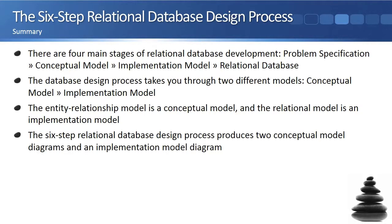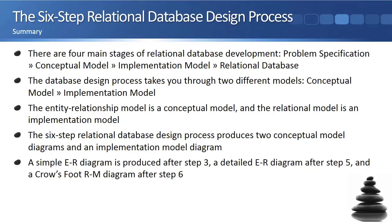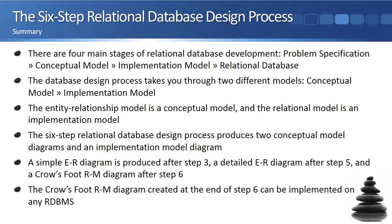The six-step relational database design process produces two conceptual model diagrams and an implementation model diagram. A simple ER diagram is produced after step 3, a detailed ER diagram after step 5, and a crows-foot RM diagram after step 6. The crows-foot RM diagram created at the end of step 6 can be implemented on any RDBMS.